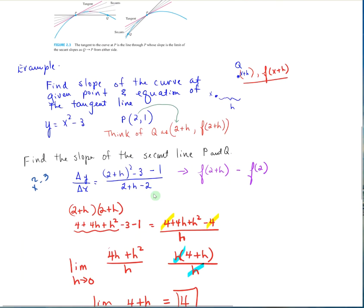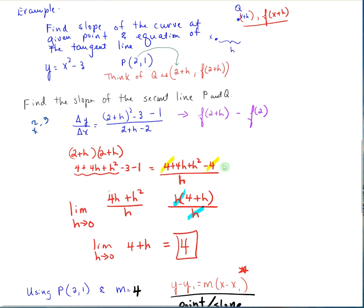Let's talk about that in an example. Finding the slope of the curve and the equation of the tangent line for y equals x squared minus 3 at the point (2, 1). We'll think of Q — that's our point P. Point Q is h units away, so 2 plus h would be the x value, and f of 2 plus h would be the y value. We're going to find the slope of the secant line between P and Q: f of (2 plus h) squared minus 3, then minus 1 — that is f of 2, which equals 1.